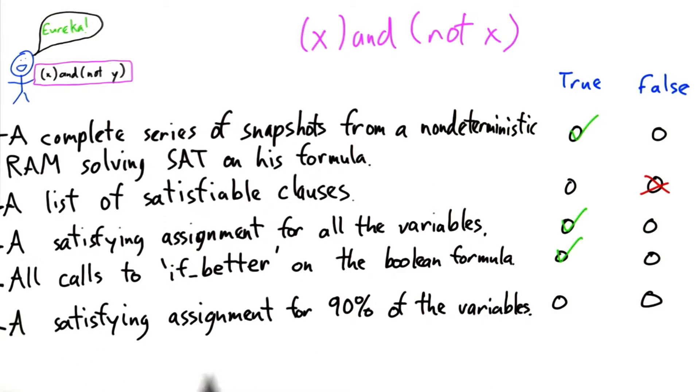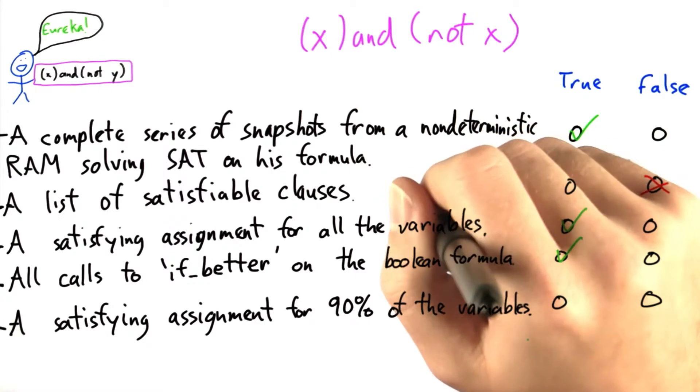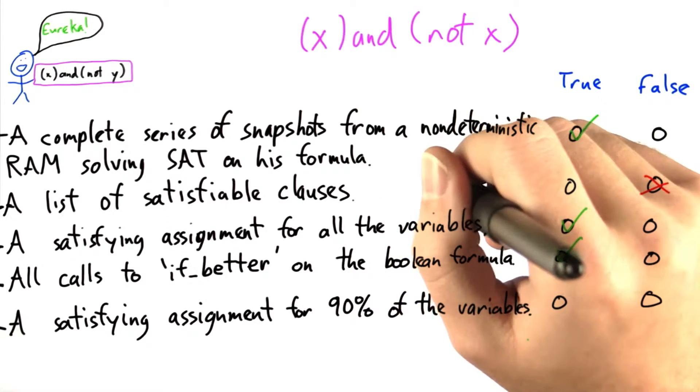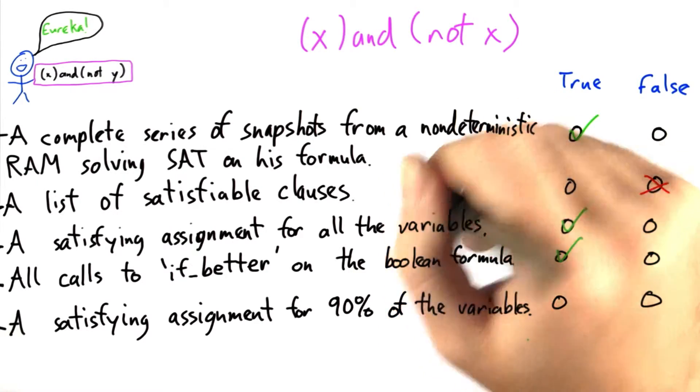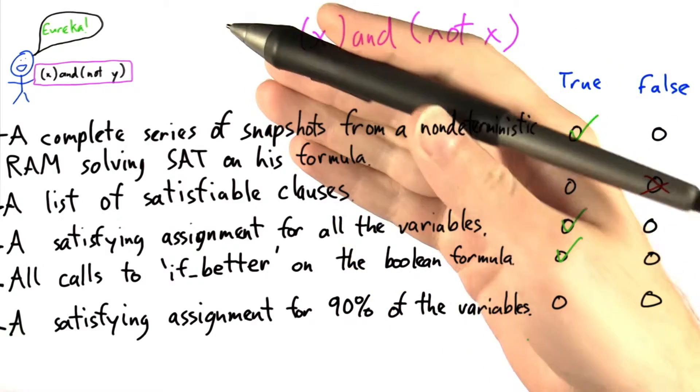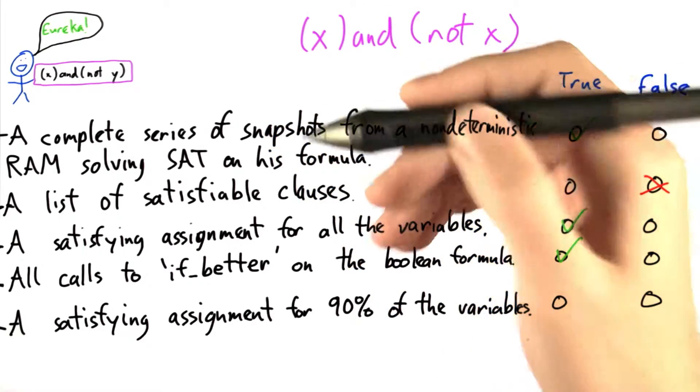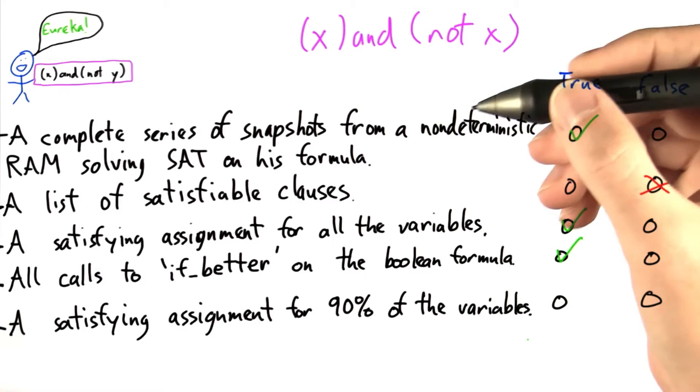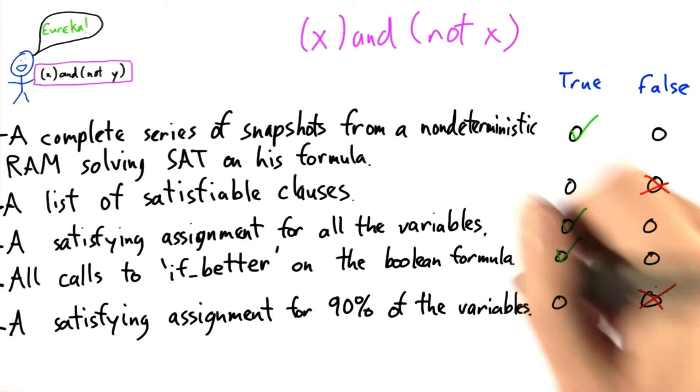Now, let's say we had a satisfying assignment for 90% of the variables. Well, 90% of the variables still leaves 10%, and 10% of exponential is exponential. So we would still have exponentially many variables to check. So this actually doesn't work.